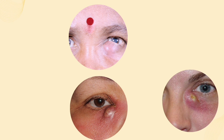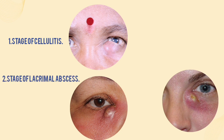Acute dacrocystitis has three stages of inflammation. Number one, stage of cellulitis. Number two, stage of lacrimal abscess. And stage three, stage of fistula formation.